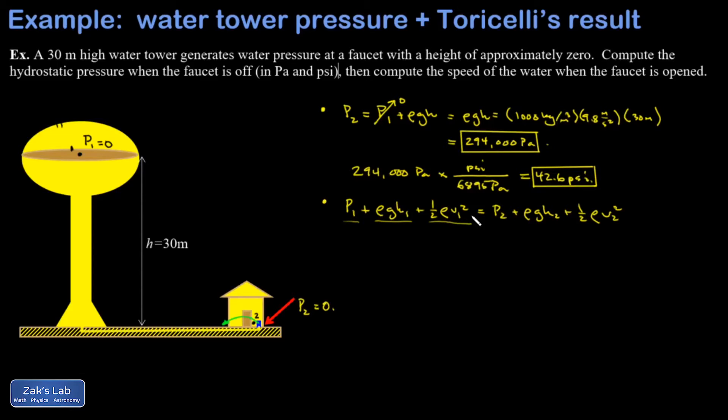So an assumption is required to make progress here. And the assumption is that V1, so the speed of the fluid up here, is approximately equal to zero. And I hope you agree with that. If you're running a single sprinkler down there, you're not going to see the water level dropping so fast that you have to worry about the kinetic energy of the fluid inside the water tower.